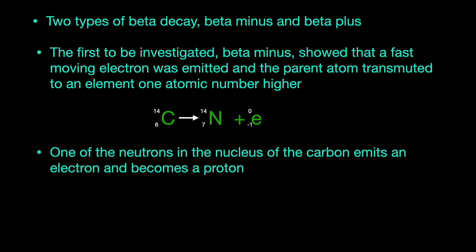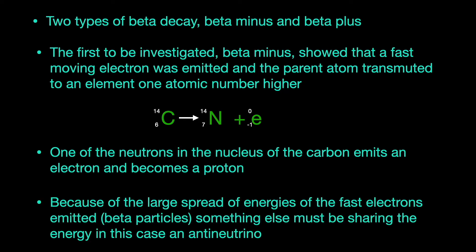But the researchers had a problem. There was a large spread of energies of the fast electrons being emitted, and since every decay was the same, you'd expect that the energy of the emitted electron, the beta particle, would be the same.